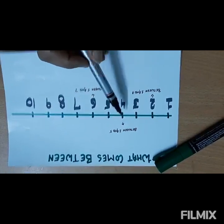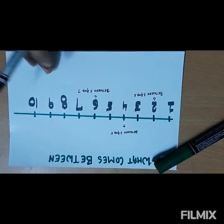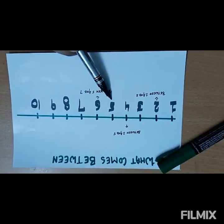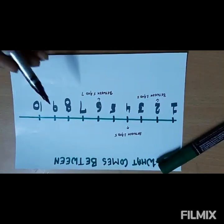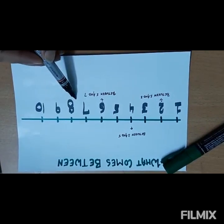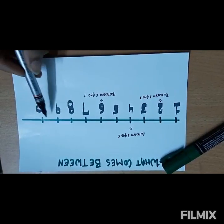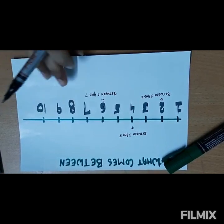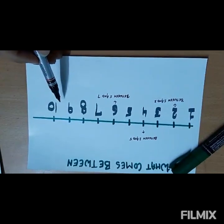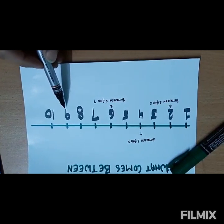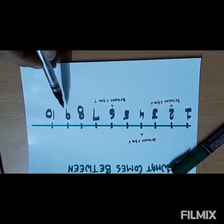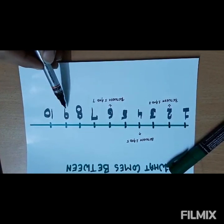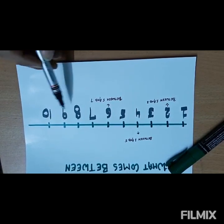Number four will come between three and five. Number six will come between five and seven. Let's take another three combinations: eight, nine, and ten. What happens here? Which number is in between? Yes, number nine is in between, so number nine comes between eight and ten.